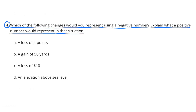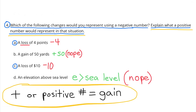Number four: which of the following changes would you represent using a negative number? A — a loss of four points — would be represented by negative four. C — a loss of ten dollars — would be represented by negative ten. B and D are not represented using a negative number because they're talking about a gain of yards or above sea level. A positive number for A would represent a gain of points, and for C a positive number would represent a gain of money.